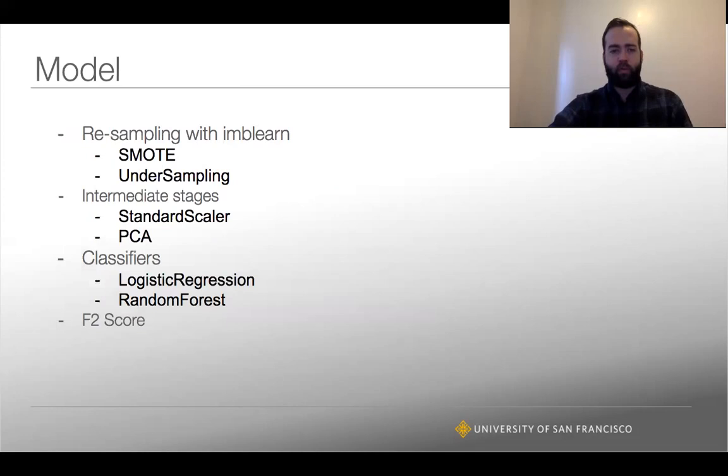To model this, we chose two different types of classifiers. However, to deal with the imbalance problem is that first step. We're going to resample using this non-sklearn package called imb-learn for imbalance learn, and we're using both SMOTE or undersampling depending on what our ultimate classifier is going to be. For logistic regression, we'll use SMOTE.